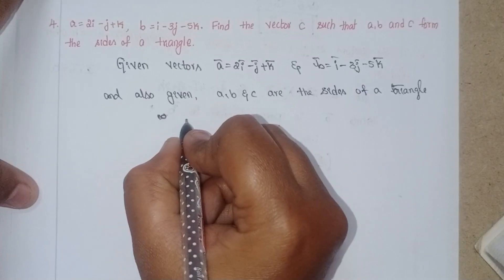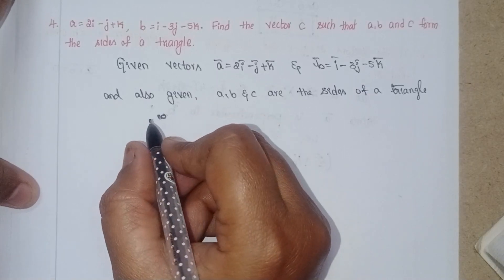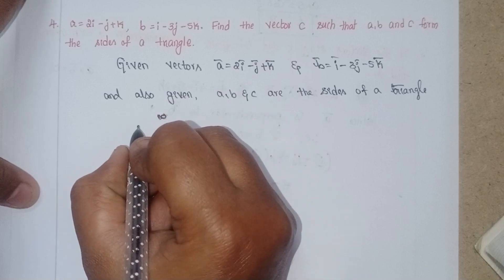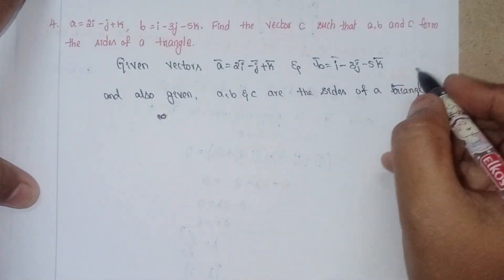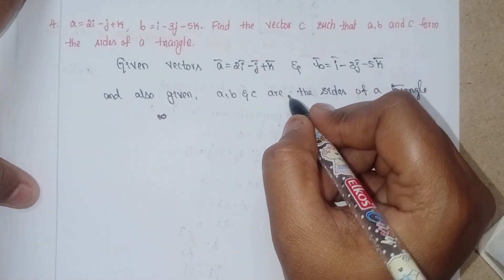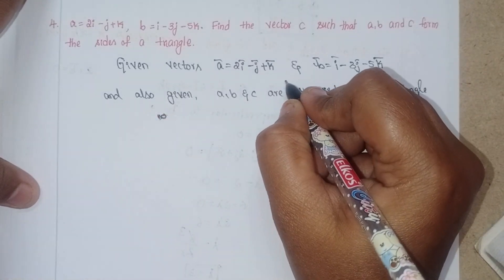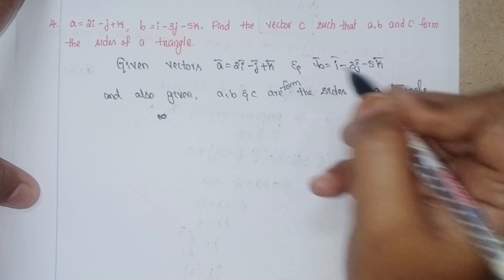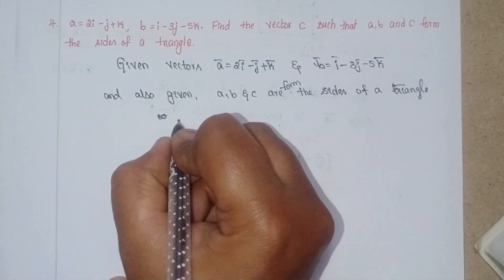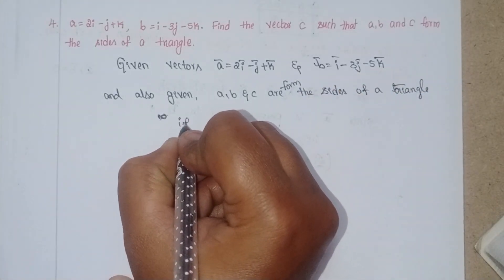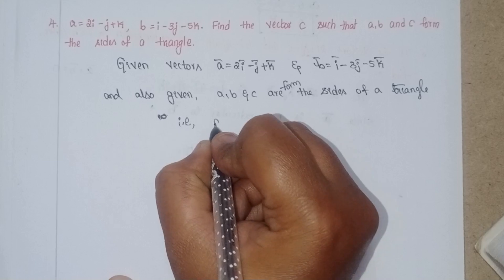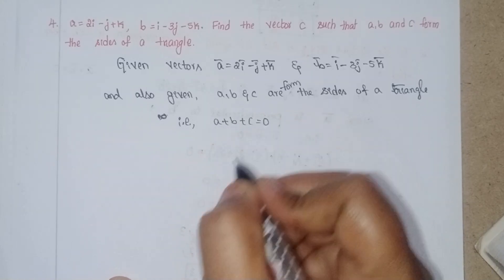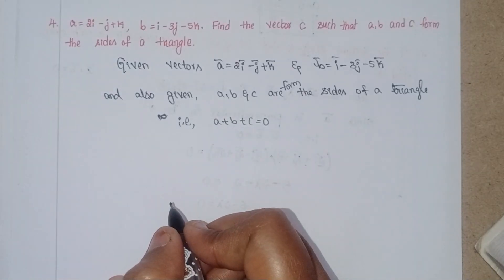So, the formula for sides of a triangle is: A plus B plus C equals zero vector.